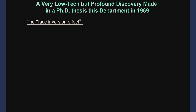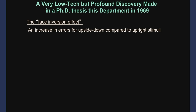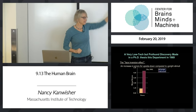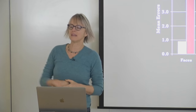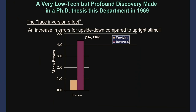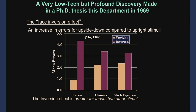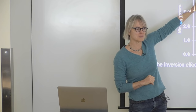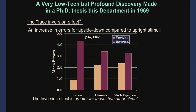He found what's known as the face inversion effect: people do much worse at this task when the faces are upside down. Here are errors for inverted versus upright — even though, importantly, they were studied and tested upside down, or studied and tested upright. The further cool thing is he showed that this face inversion effect is greater for faces than for other kinds of stimuli. He tested lots of other things, including houses and stick figures, and showed that the cost when you turn stimuli upside down is greater for faces than for other classes of stimuli.